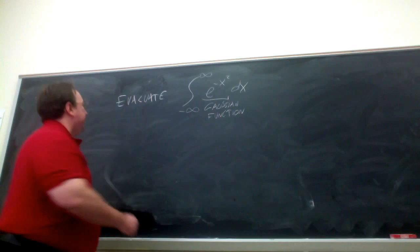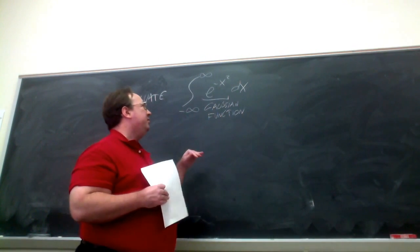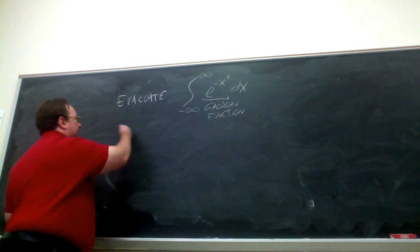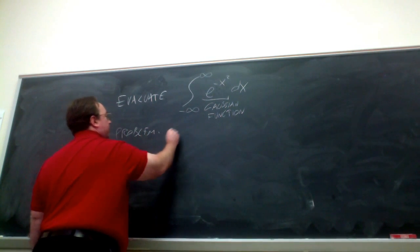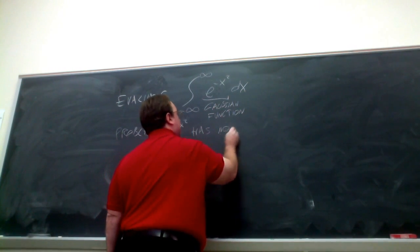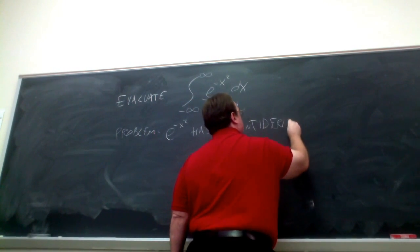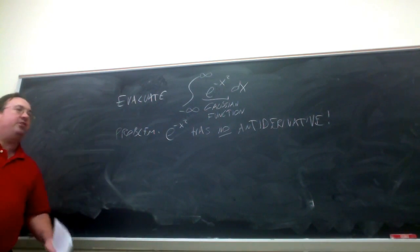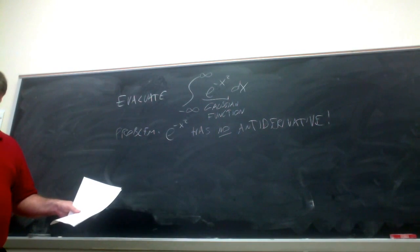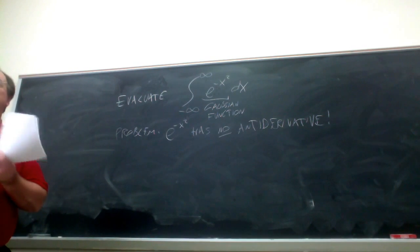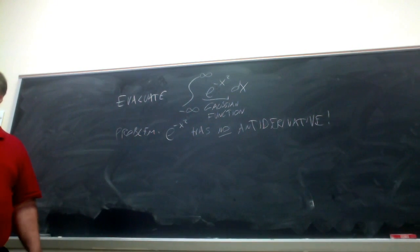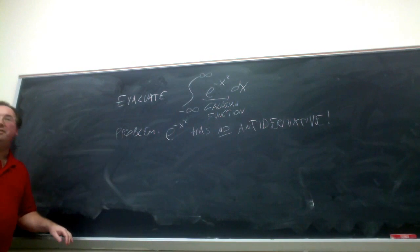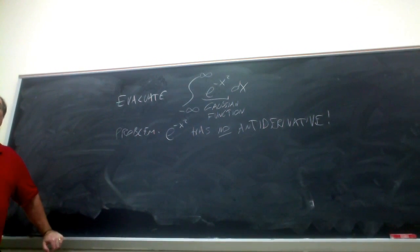But there's another problem. Normally you would just compute the indefinite integral of e to the minus x squared and then handle the limits. The difficulty is that the function e to the minus x squared has no antiderivative, at least not in terms of elementary functions — it's actually been proven that no such antiderivative exists. In Calculus 2 you use integration by parts, partial fractions, substitutions — you might try u equals minus x squared, but it won't get you anywhere. You can try until the cows come home; you won't find an antiderivative.